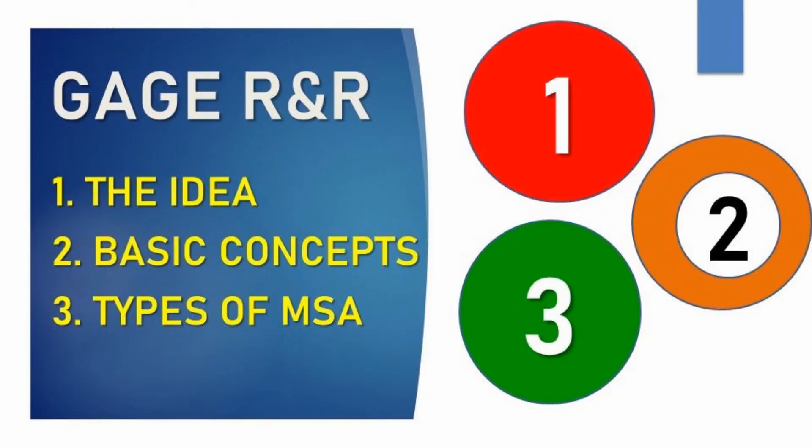So in this video, we reviewed the idea of Gauge R&R. The big idea: we need to have reliable data and we need to trust in that data. The method to evaluate the measurement system is the Gauge R&R. We also reviewed basic concepts — bias, linearity, and more — and the different types of Gauge R&R. Our main objective is to make sure the measurement system is working properly. Thank you for watching. I am Fernando Rodriguez and I hope you enjoy the rest of the videos.